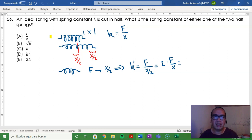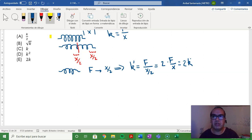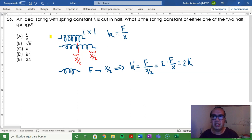the new constant has to be equal to twice the old constant. Or in other words, what we're saying is that the spring becomes more rigid than before. So your answer is option E.